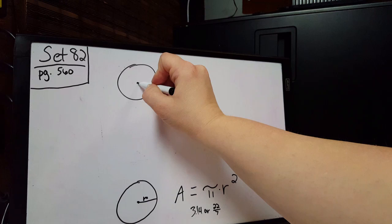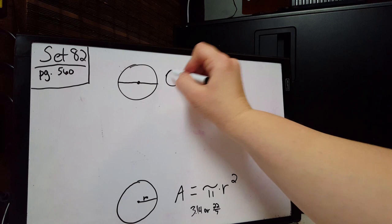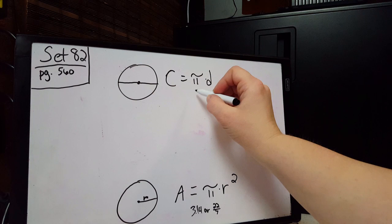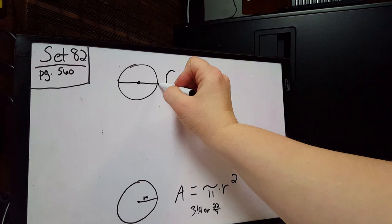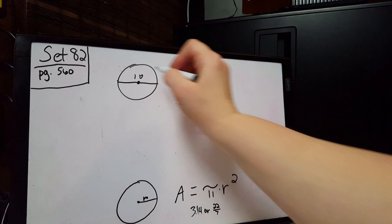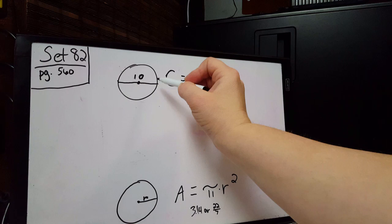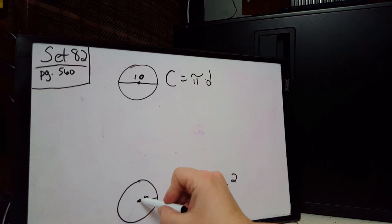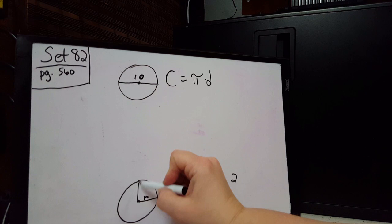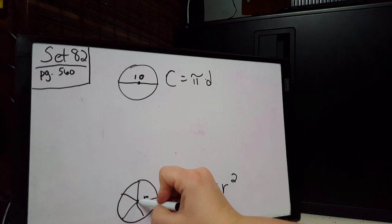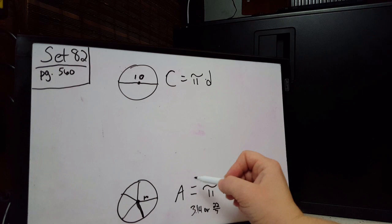We've learned before about the circumference of a circle, where we use the diameter. To find the circumference it's pi times the diameter — either 3.14 or 22/7 — times the distance straight through the middle. For area, we don't use the whole diameter; we use just the radius, from the center to the edge. The radius can be shown going in any direction as long as it starts at the center and ends at the outer edge.